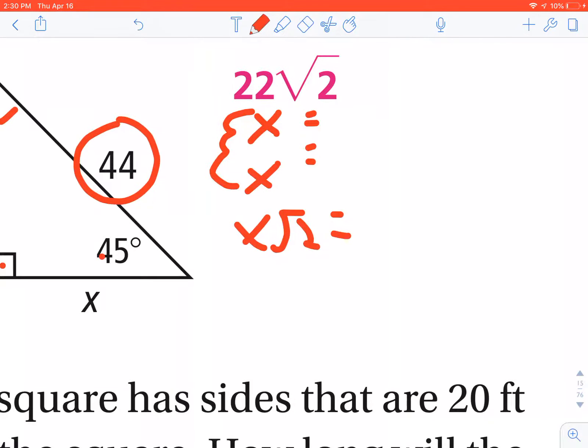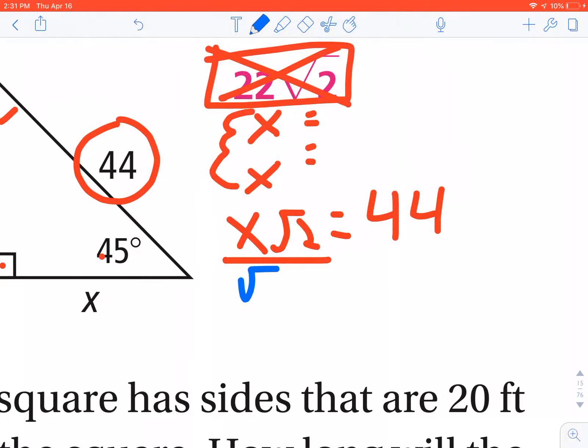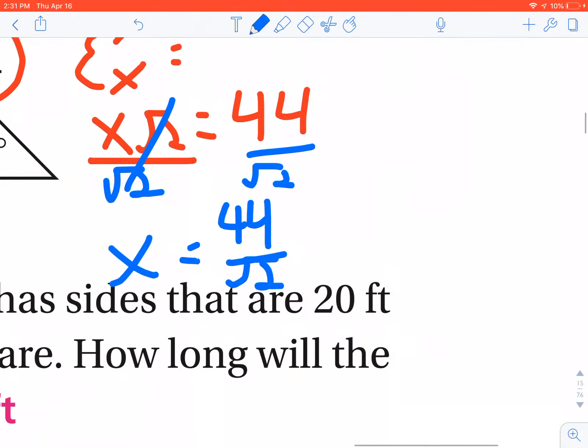I've given you 44 as the hypotenuse, and this is one where the answer they give you is going to be different because I'm allowing you to not do the full rationalization of the denominator. To solve for x, we're simply going to divide both sides by radical 2. These cancel out. x equals 44 over radical 2. This is the answer you're expected to have.